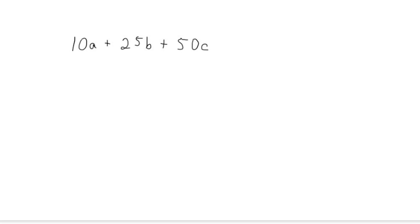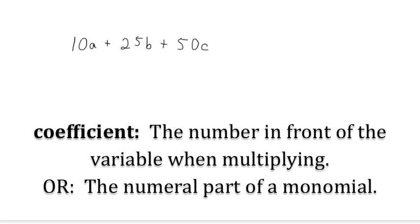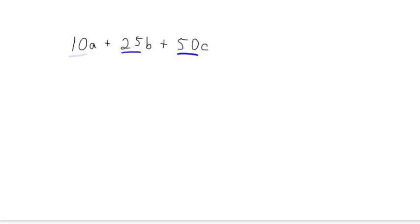Whenever you go to factor a polynomial, the first thing you should look for is to factor out a common monomial, if at all possible. When you look to factor out a common monomial, you should begin by looking at the coefficients. In this case, our coefficients are 10, 25, and 50. What we want to do is find the greatest common factor of 10, 25, and 50 in order to factor that number out.